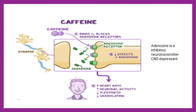Caffeine binds to the adenosine receptor and blocks the action of adenosine. Adenosine is an inhibitory neurotransmitter present in the brain, responsible for depressing the CNS. Caffeine deactivates adenosine — adenosine cannot bind to its receptor, so the inhibitory effects are diminished. Instead, caffeine shows stimulatory action due to its analeptic nature, increasing heart rate, neuronal activity, and decreasing sleepiness.